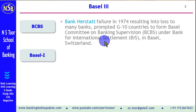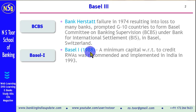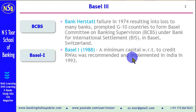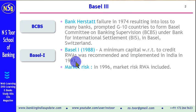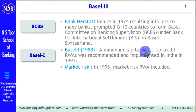This committee gave its recommendations on capital adequacy ratio on three occasions. The first is called Basel I. Recommendations were given in 1988 and related to maintaining minimum capital with reference to credit risk weighted assets only. In India, these recommendations were implemented in 1993. Subsequently in 1996, market risk was also added for maintaining minimum capital.